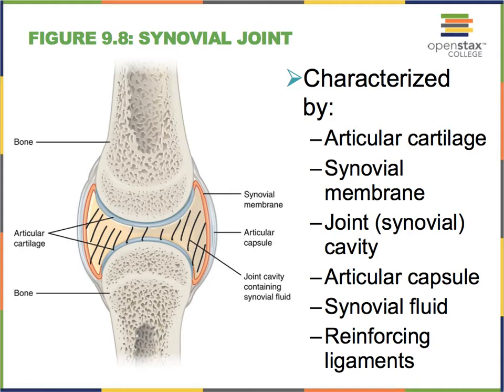These are the typical structures found in a synovial joint. Very often, in addition to your typical articular capsule, you might also have additional reinforcing ligaments, perhaps interconnecting different portions of the bones.